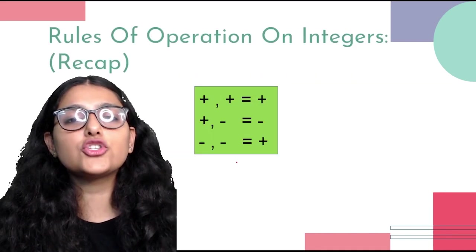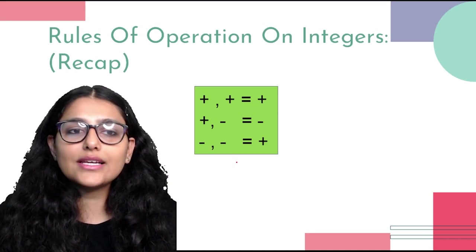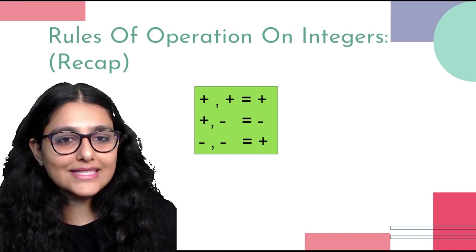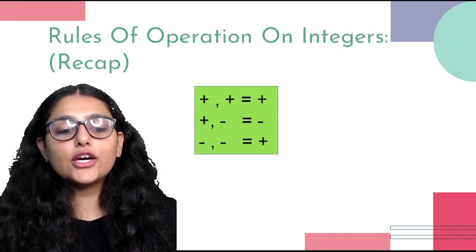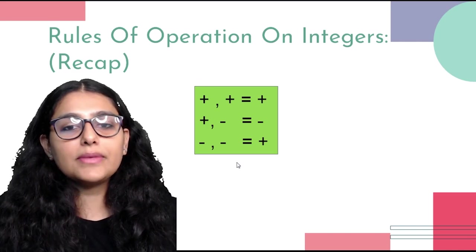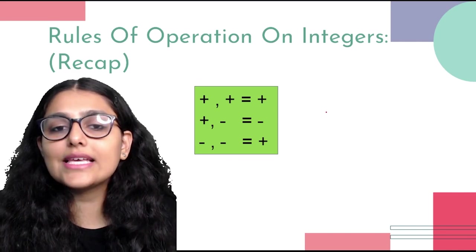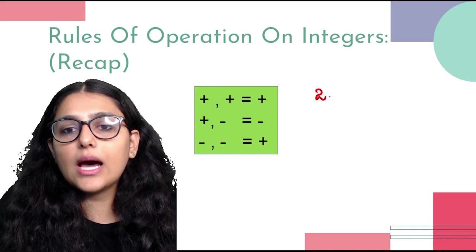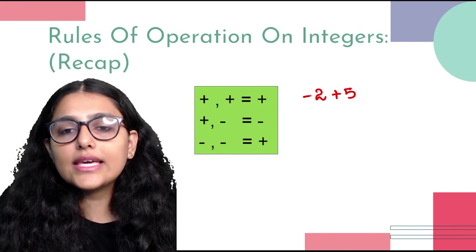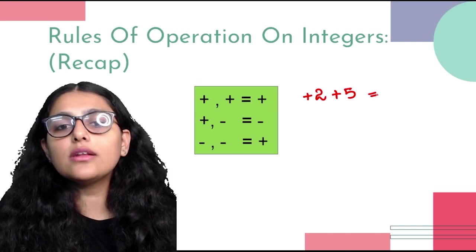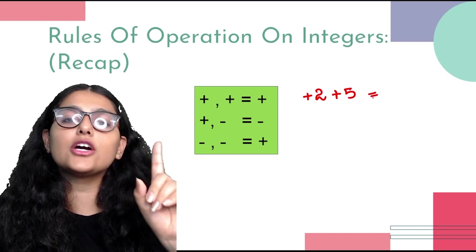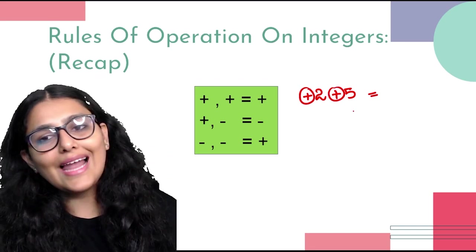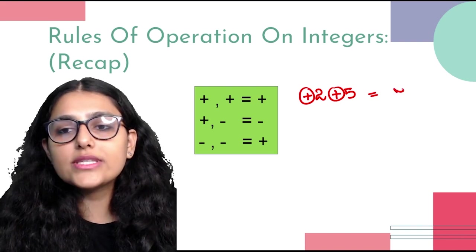Now let's look at the rules of operations on integers — we started this in Class 6. If we have 2 positive signs, the operation will always be positive. For example, 2 + 5: both are positive integers, so we add them. 5 plus 2 is equal to 7.